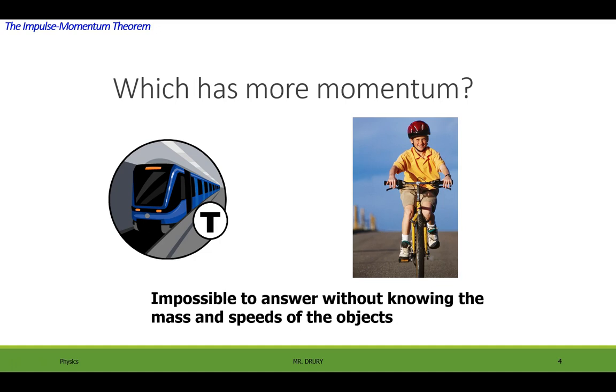And the reason I gave you this idea is that a lot of people think that a train would have much more momentum, but that's only if it's moving. So it's a product of mass and velocity, so you have to have both.